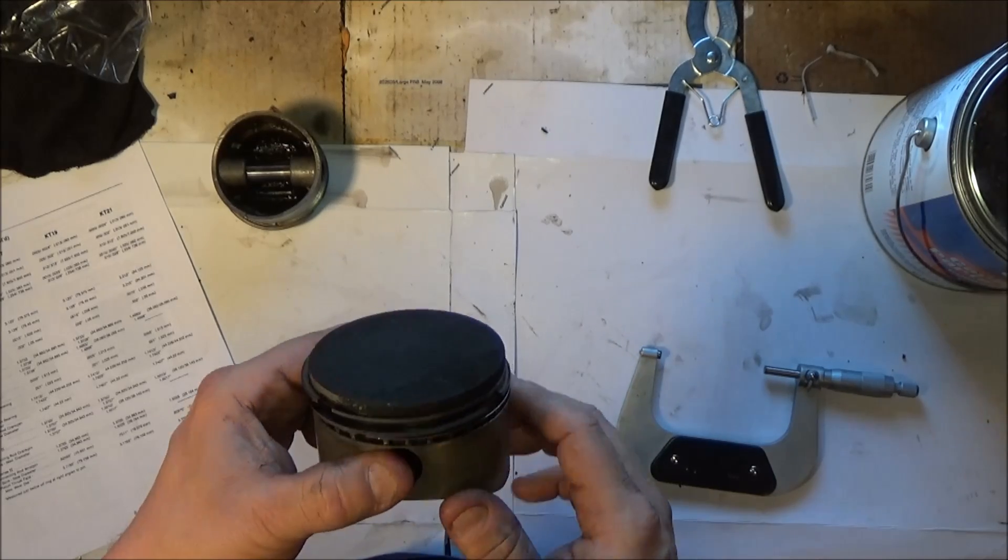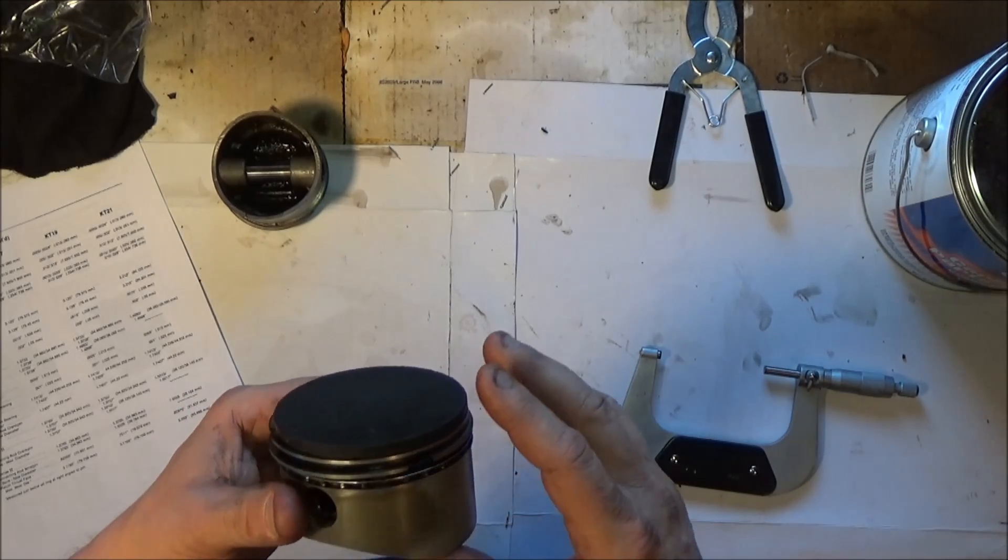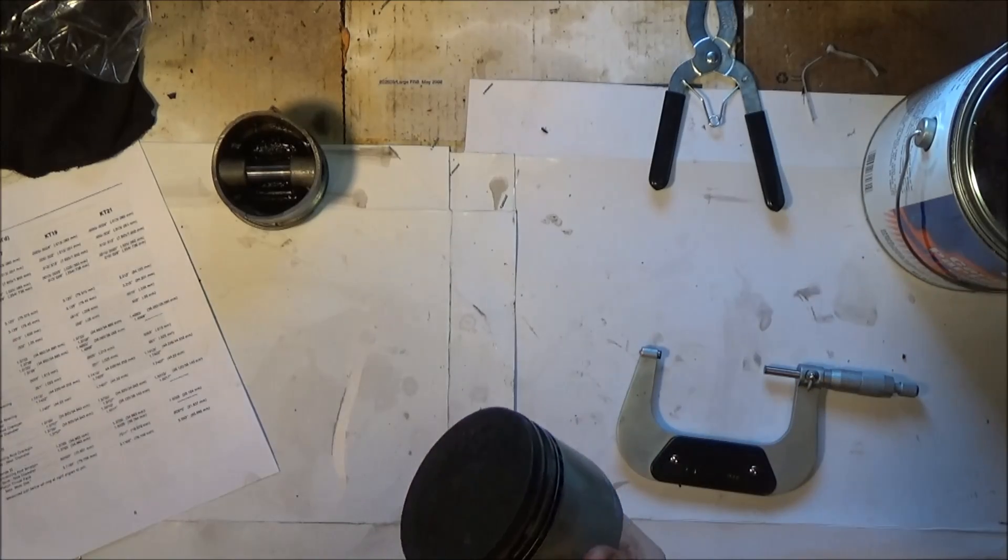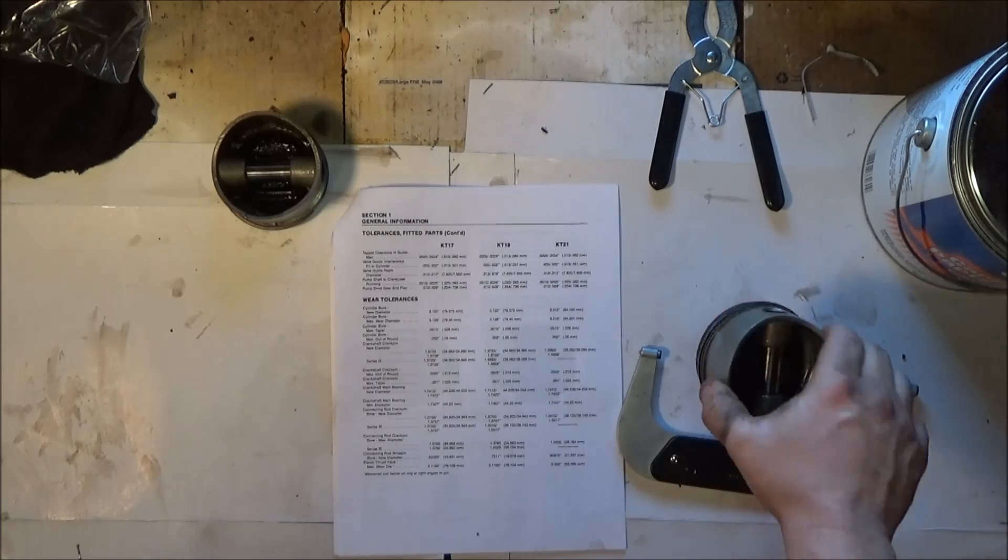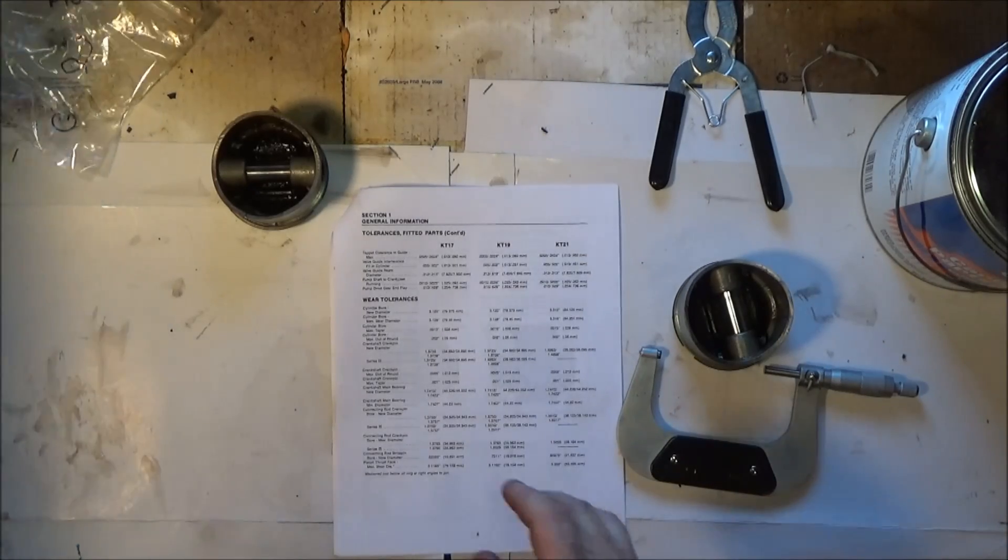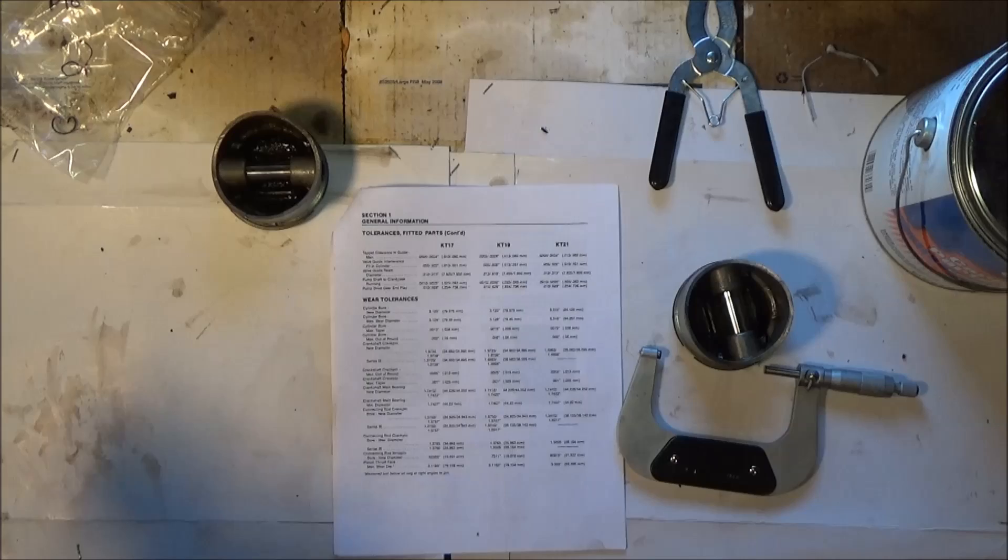You're supposed to take a wood scraper and scrape that off. I've got a little different method. If you go to Kohler's website here, you can download all the tolerances and clearances and sizes of everything.